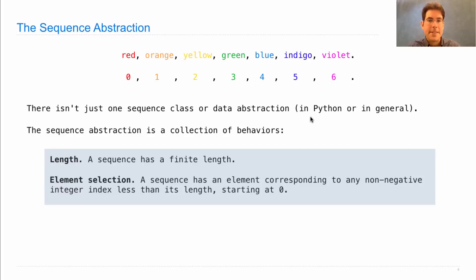And any sequence type in Python needs to support element selection as well as the length. Now we've already seen that there's a built-in syntax associated with this behavior. We can use square brackets after an expression to select a particular element. We can also use the built-in len function to get the length of any sequence, whether it be a list or a tuple or a range.